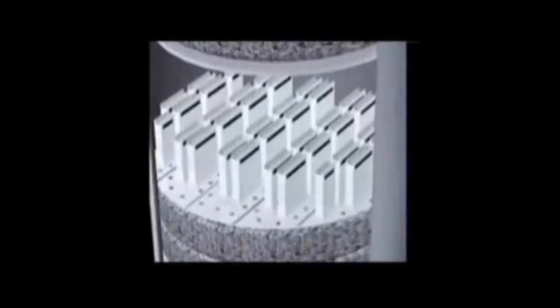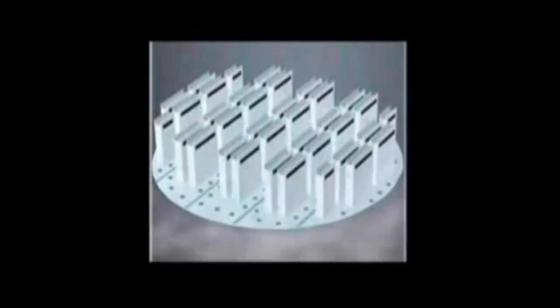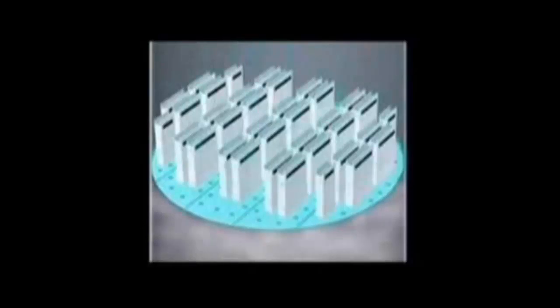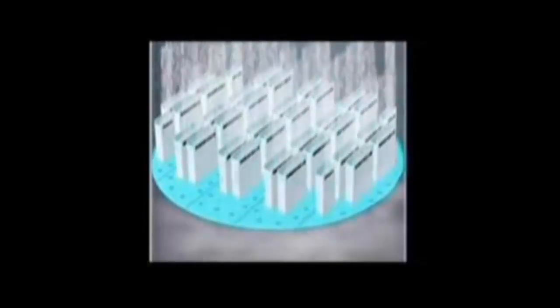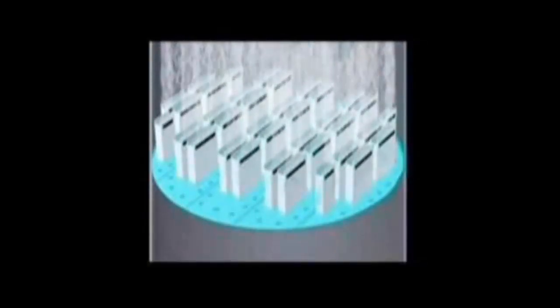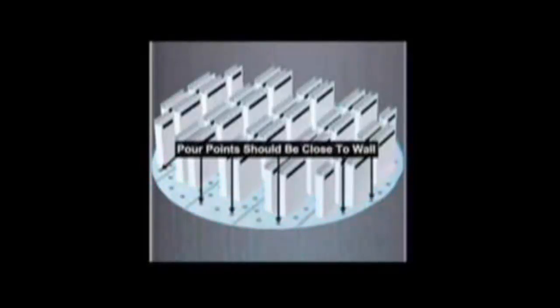The orifice riser distributor is designed to lay the liquid carefully onto the bed with a minimum of contact with vapor during the process. This is accomplished by providing a low pressure drop pathway for the vapor through the risers, while delivering the liquid through a large number of small diameter orifices. Because of the number of liquid orifices, a large number of uniformly distributed pour points is possible.